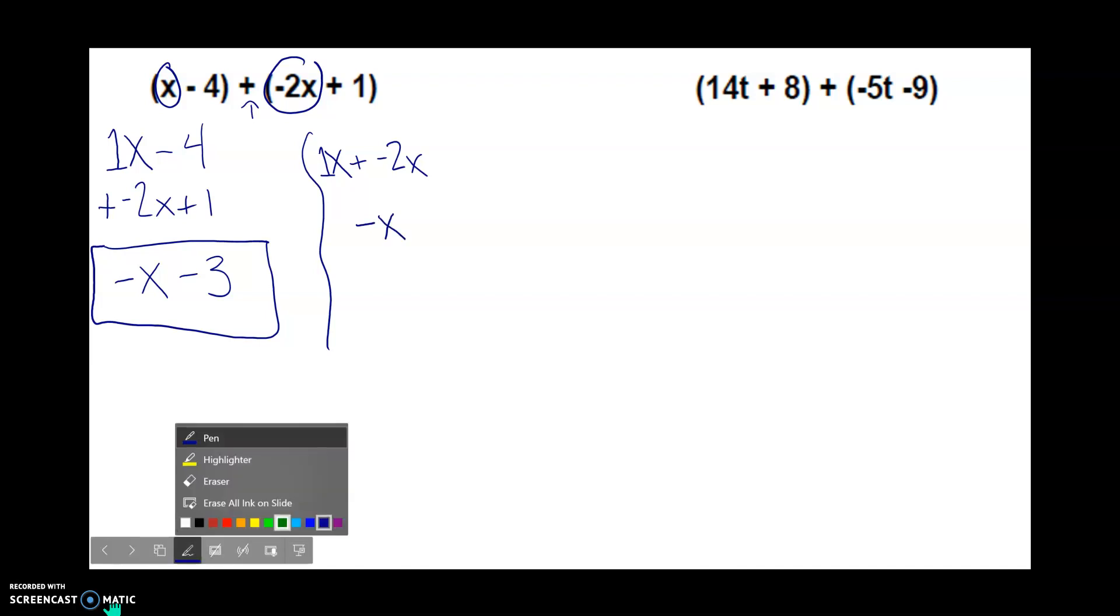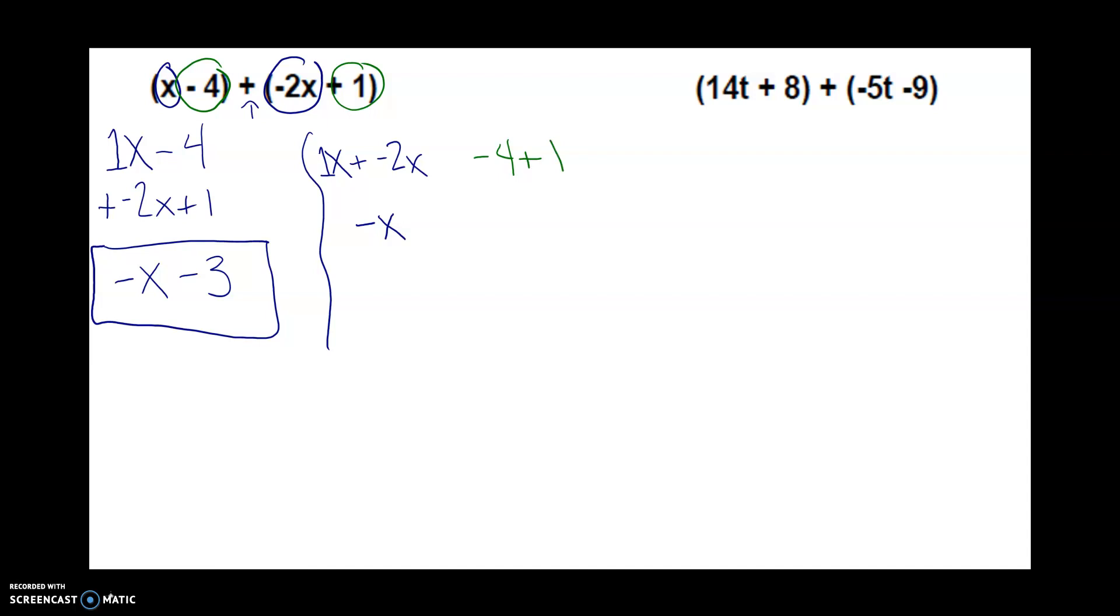Then I'm going to also group my constants here. I'm going to treat this like negative 4 plus, because there's a plus sign in the middle, a positive 1. Negative 4 plus 1, the 4 is larger. The negative team wins by 3. So negative 3, and I put this all together to get negative x minus 3. So that would be your grouping method versus the stacking method. You can pick either method.